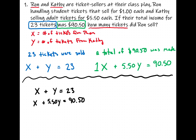I'm going to solve this by elimination. Substitution always works and elimination always works — it's personal preference. The question asks how many tickets did Ron sell, and x is the number of tickets Ron sold, so let's keep x and get rid of y. To eliminate the y's, they have to be equal and opposite. The second equation has positive 5.50y, so let's make the first equation's y term into negative 5.50y by multiplying that first equation by negative 5.50.